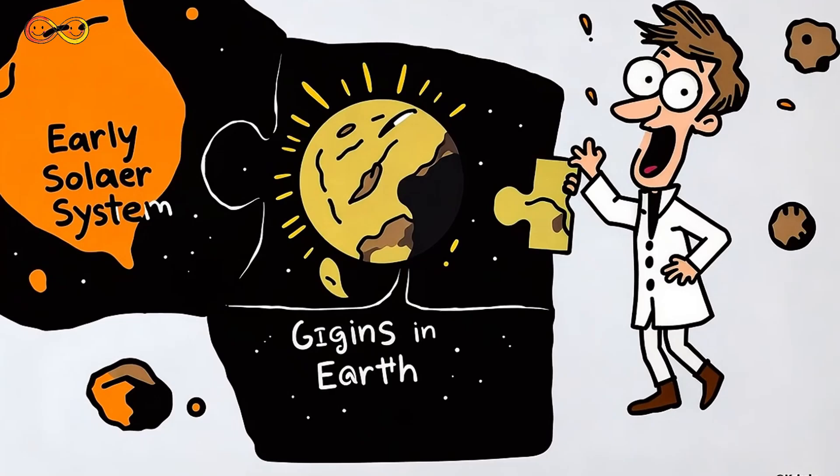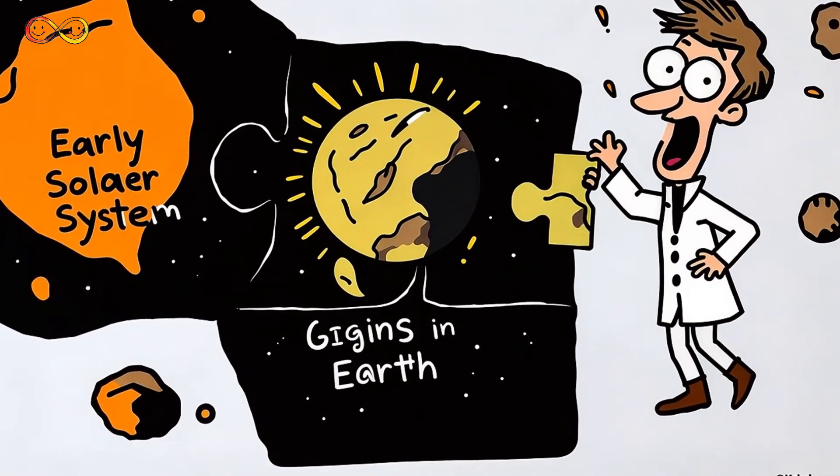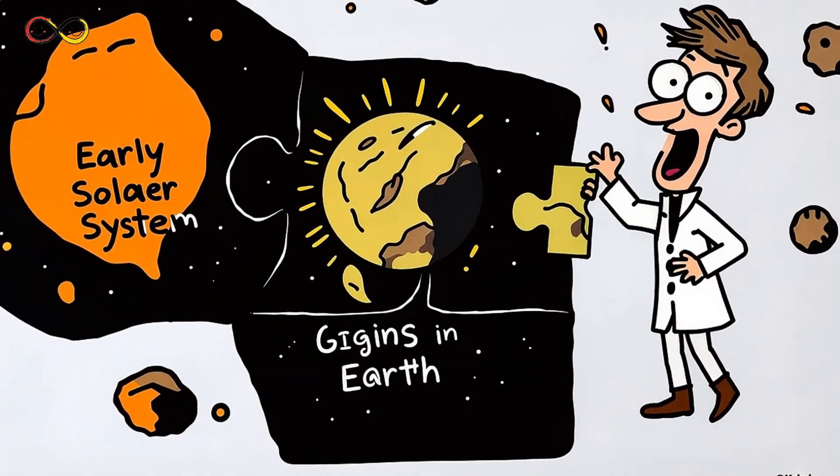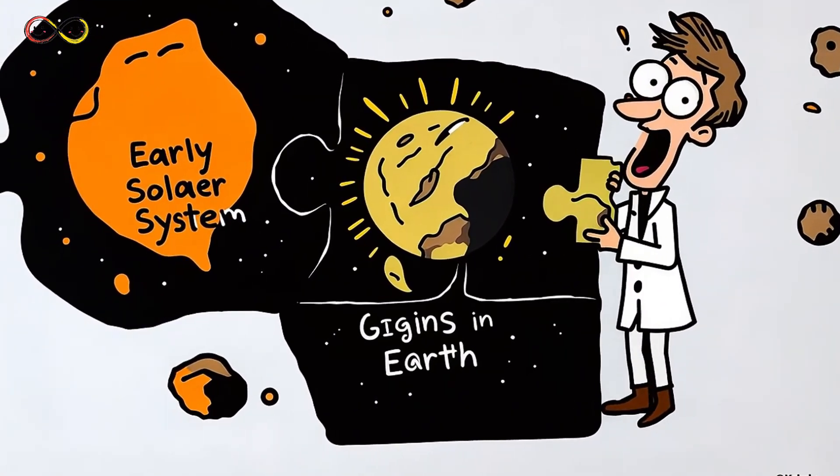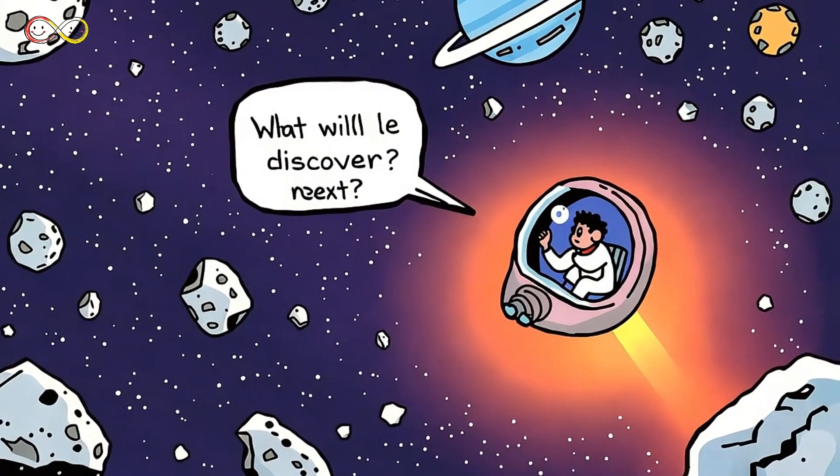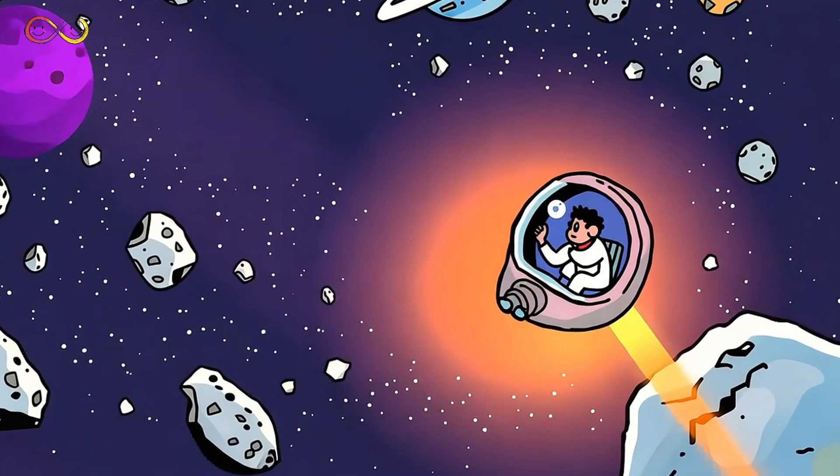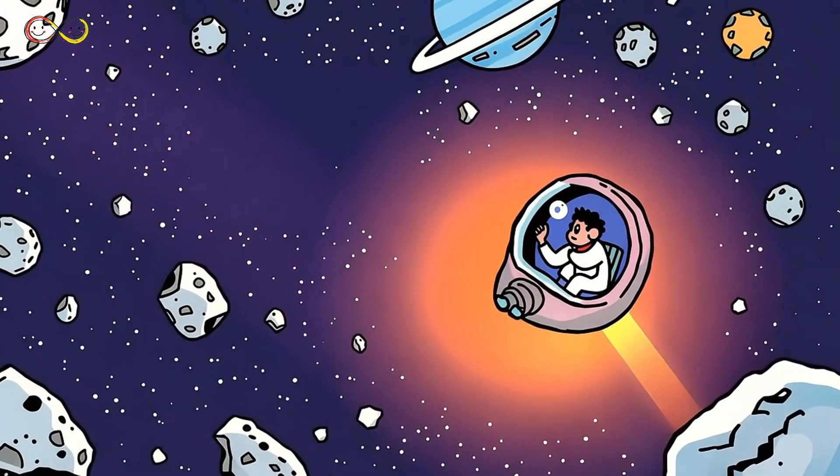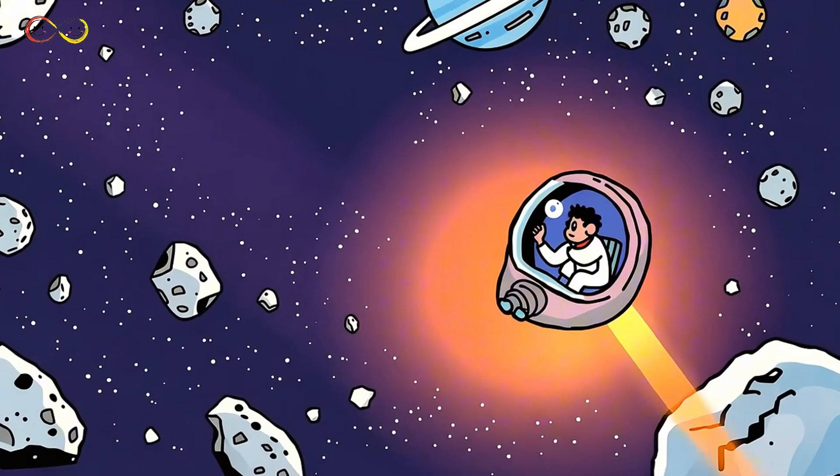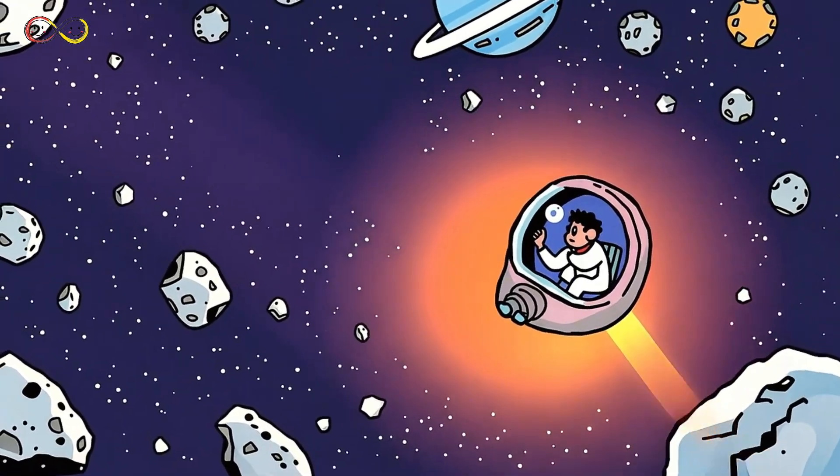By studying asteroids, scientists learn more about how planets, including Earth, were formed. These space rocks are like puzzle pieces from the beginning of time, helping us unlock the secrets of our universe. Every asteroid tells a story, and the more we study them, the closer we get to understanding the history of our own world. The universe is full of mysteries, and who knows what we'll discover next?